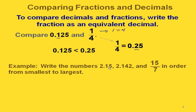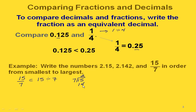Here's an example: we're going to write three numbers in order from smallest to largest. To do that, we're going to have to convert 15 sevenths to decimal form so we can compare it to the other two. We'll divide 15 by 7. To compare it to the other numbers, we're going to have to take this out to at least the hundredths place, and maybe even the thousandths place or farther.